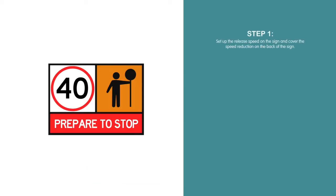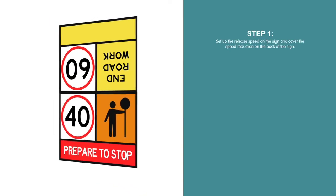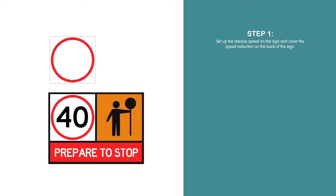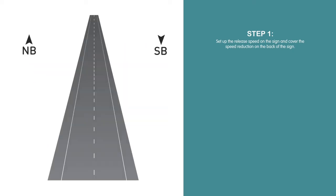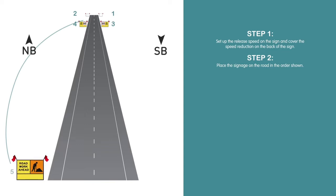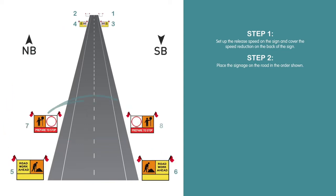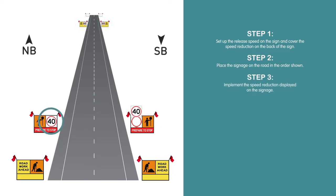Step 1: Set up the release speed on the sign and cover the speed reduction on the back of the sign. Step 2: Place the signage on the road in the order shown. Step 3: Implement the speed reduction displayed on the signage.